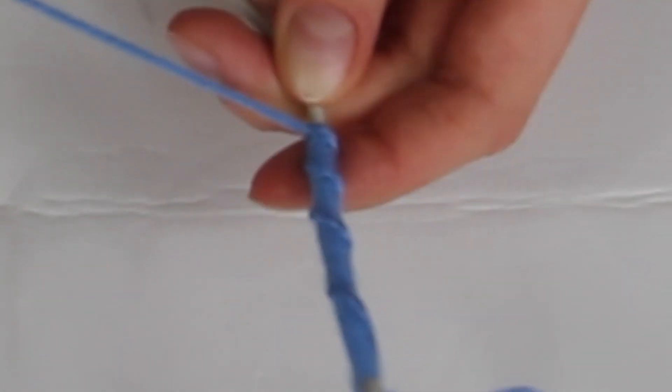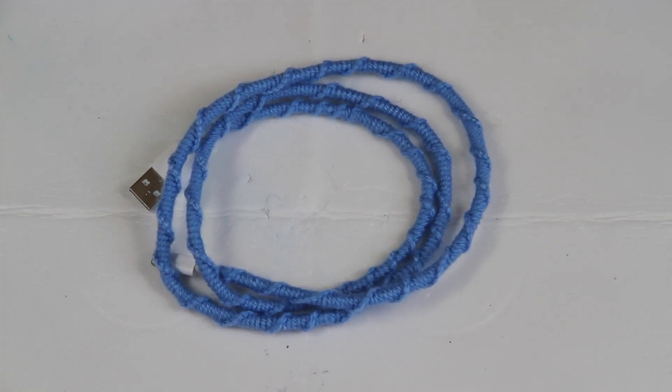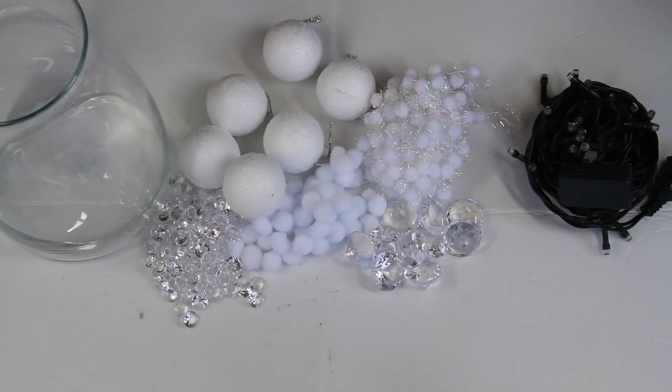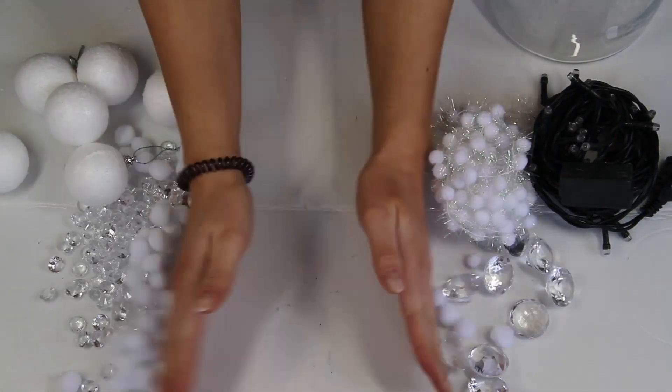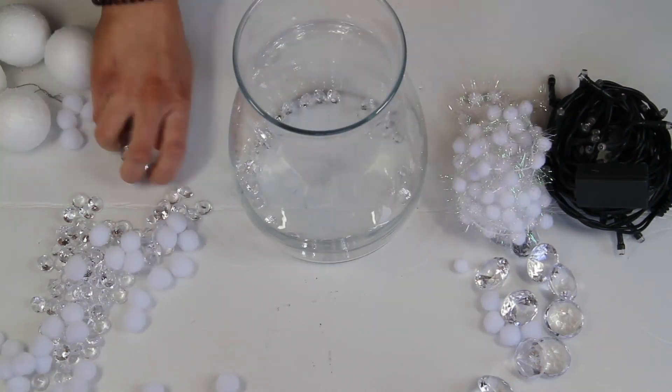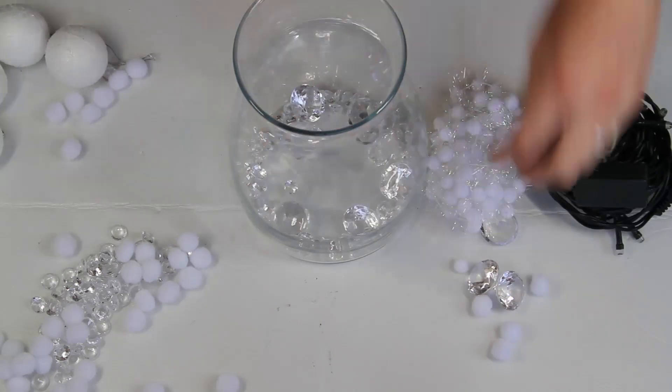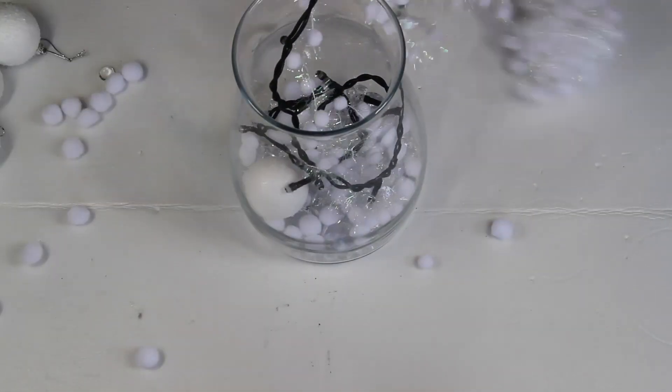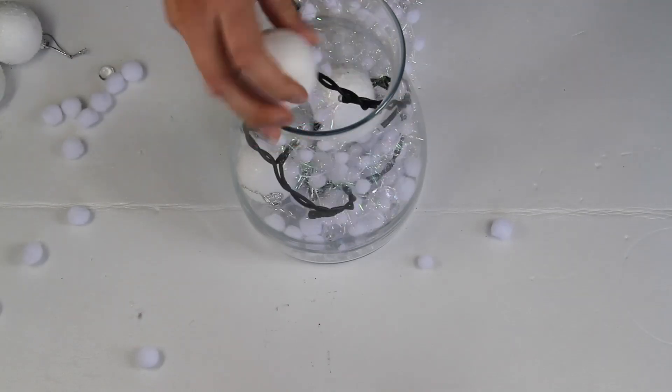Our third DIY is this glass that you fill up with decorations of your choice and some lights. I started with some diamonds, then put on some ornaments from Christmas, and the garland wrapped around the lights, and of course some pom-poms because they look pretty cool.